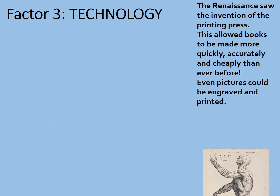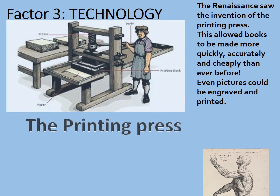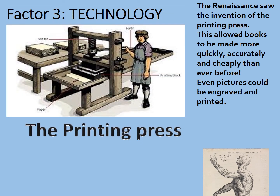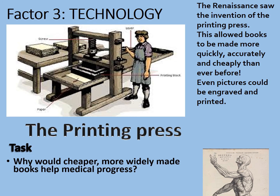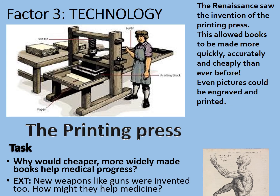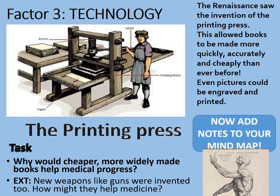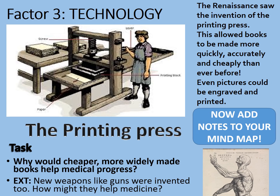Factor 3: technology. The Renaissance saw the invention of the printing press. This allowed books to be made more quickly, accurately, and cheaply than ever before, allowing information to be shared much more widely and easily. Even pictures could be engraved on wooden blocks and printed. Why would cheaper, more widely made books help medical progress? Also, new weapons like guns were invented — how might they help medicine, even if they didn't help people's health? Consider those questions, add answers to your mind map, and pause the video.